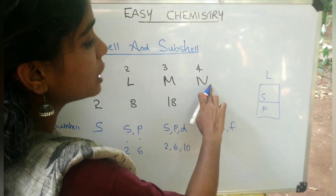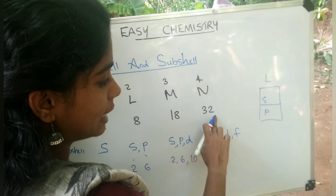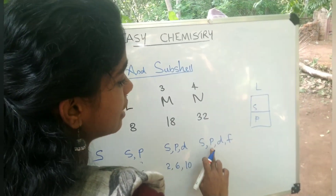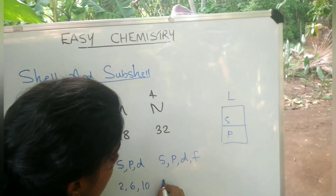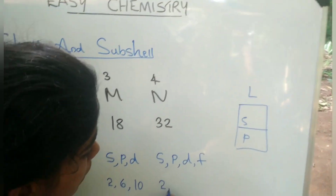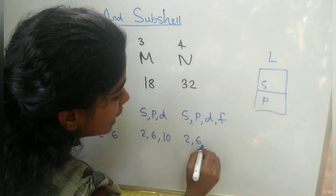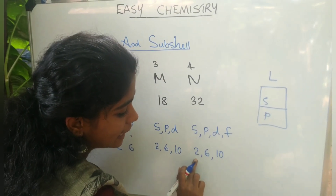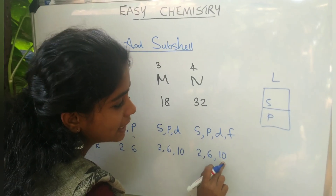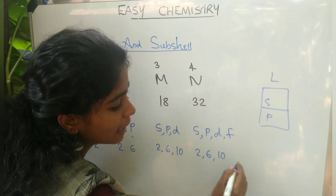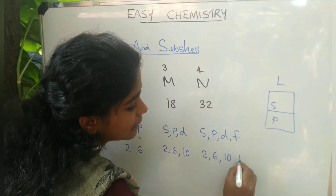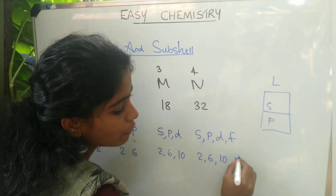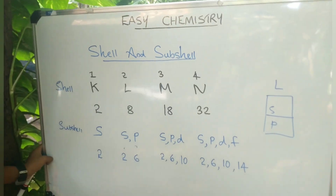The 4th shell is N, with a maximum capacity of 32 electrons. It has 4 sub-shells: S, P, D, and F. S is maximum 2, P is maximum 6, D is maximum 10, and F is maximum capacity 14.